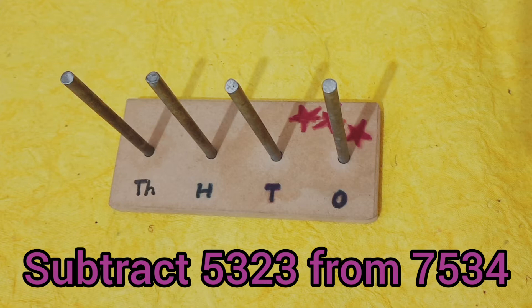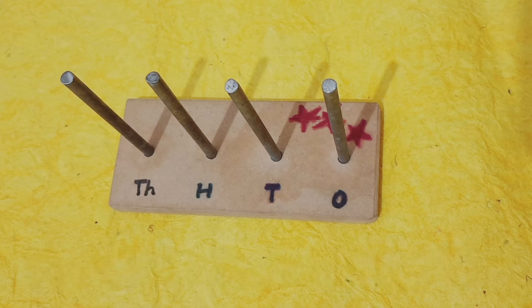Let's subtract 5323 from 7534. This is an abacus that expresses the place value of the digits of the numbers.